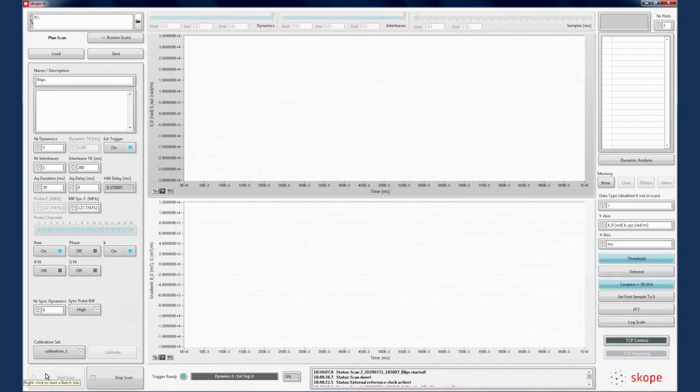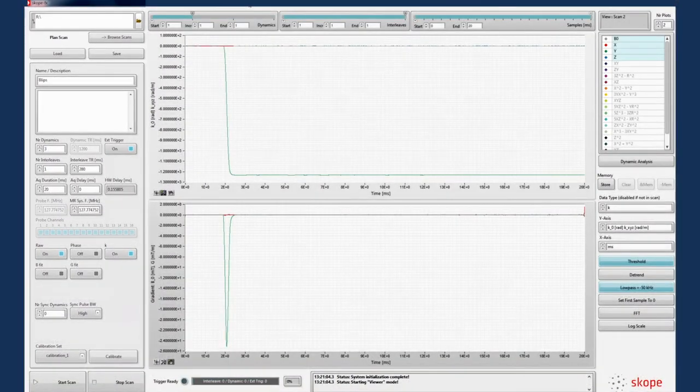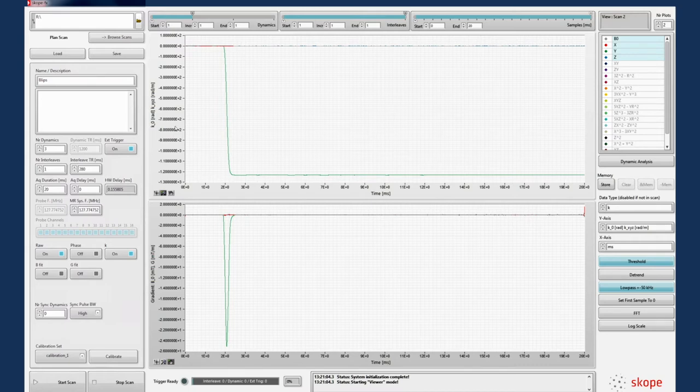As the triggers are played out, we can see the scope system acquiring data. Data is automatically processed on the acquisition system after the scan is completed. Here, we can now inspect the gradient and k-space waveforms on ScopeFX.